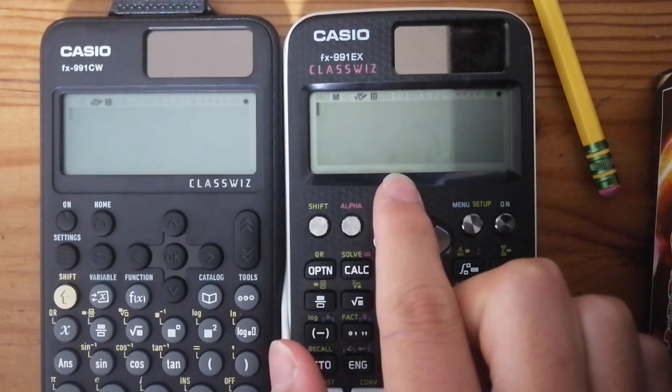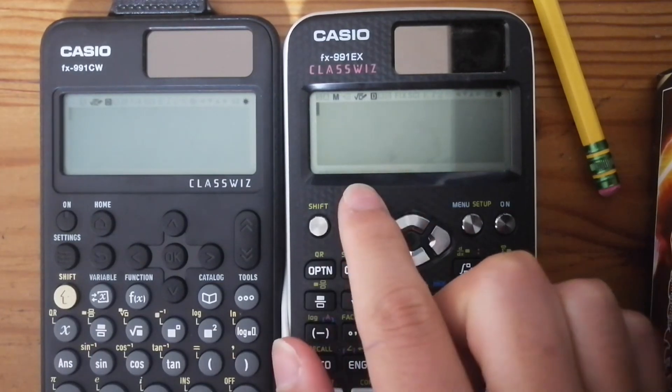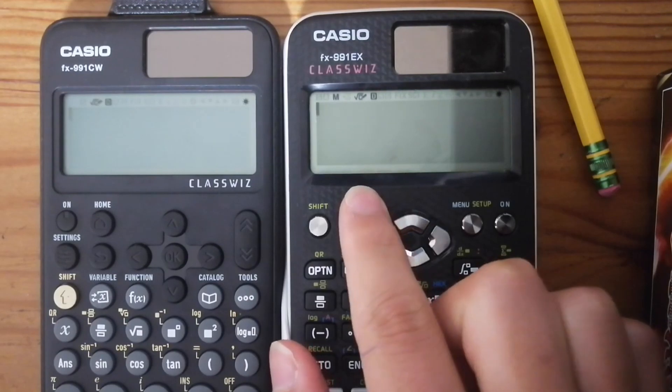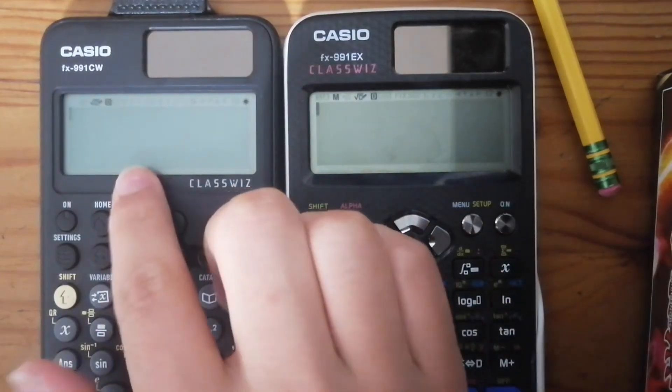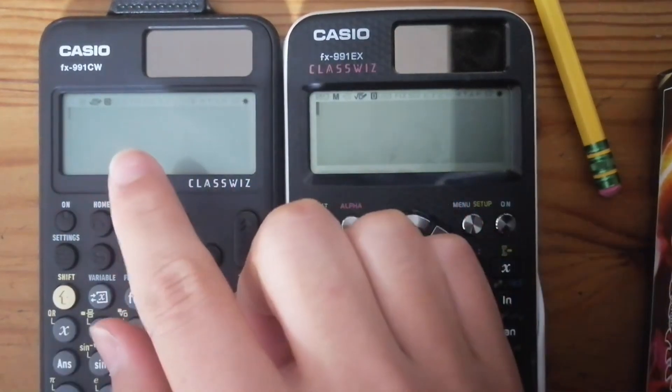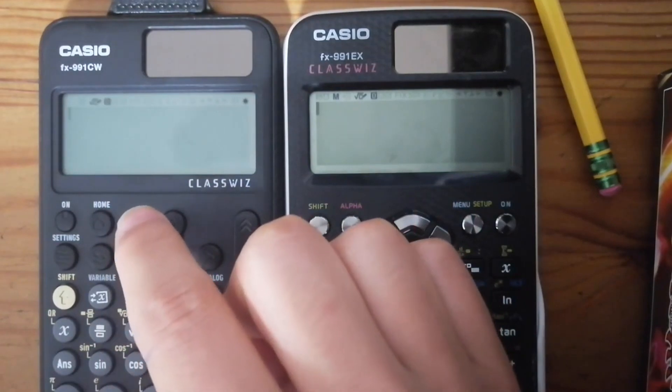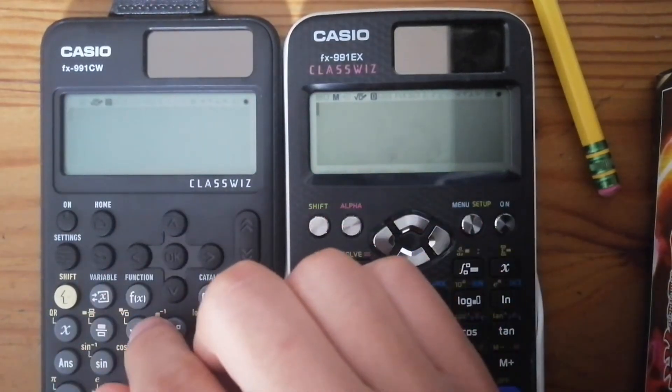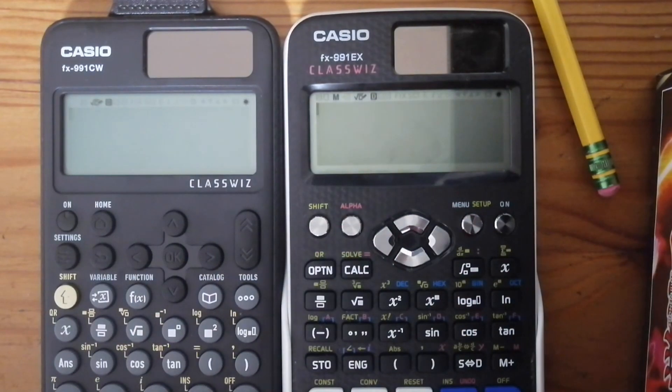This is the older one. Almost everybody, not everybody, but a lot of people at my school have this model of calculator. However, as for the CW, I think I'm the first person at my school to actually have one of these. I've never seen a student use one of these before, so I just got one today and I just want to do a little comparison between them.